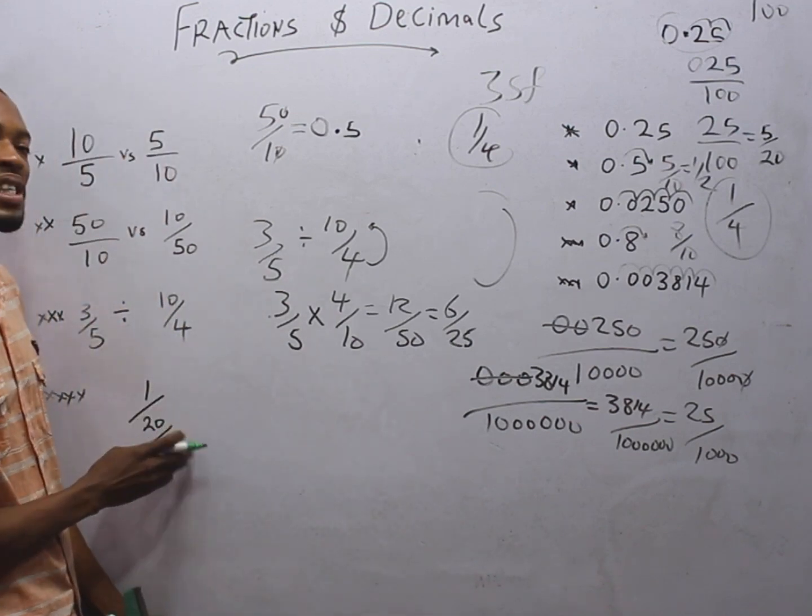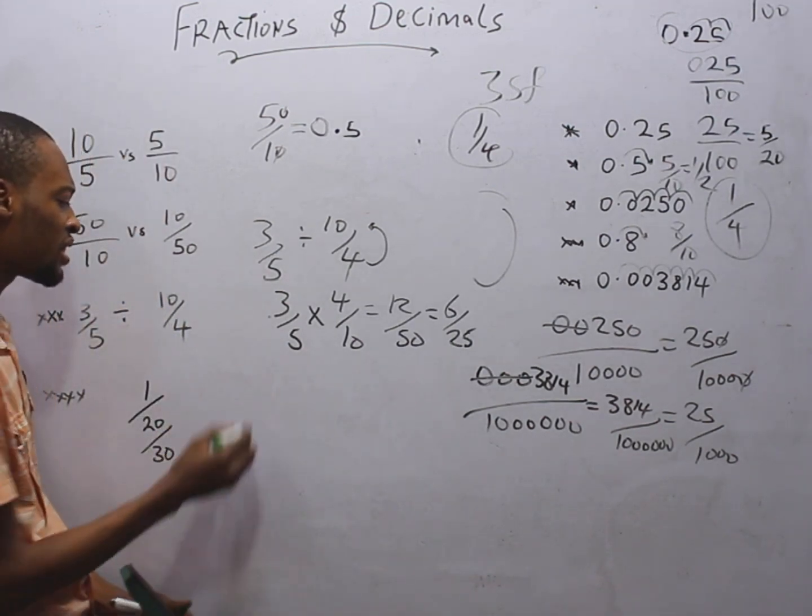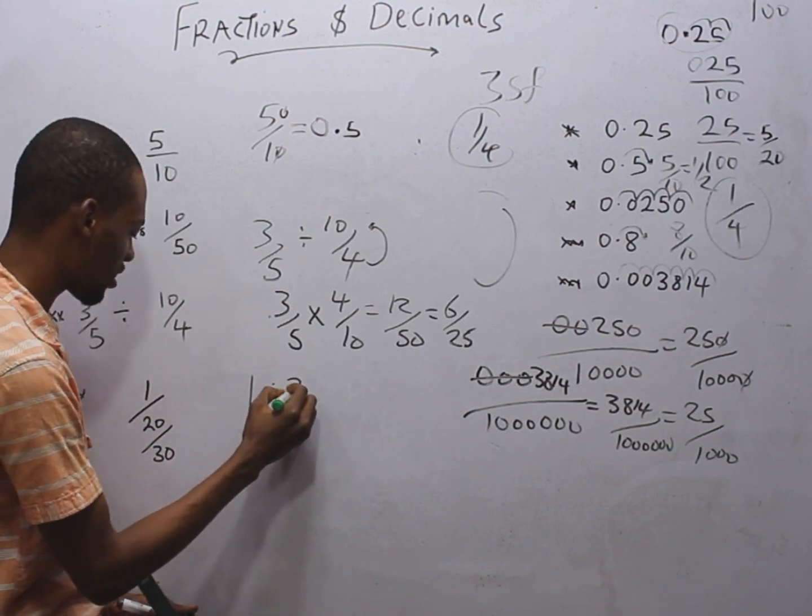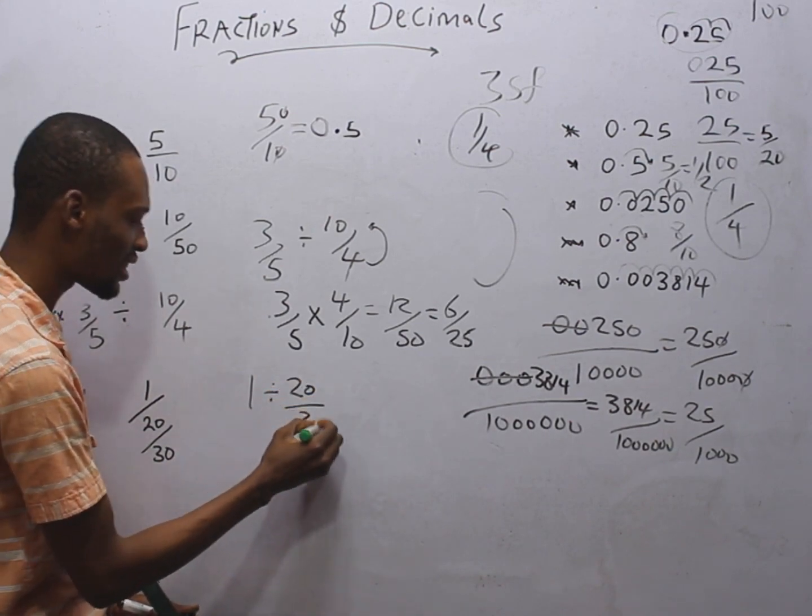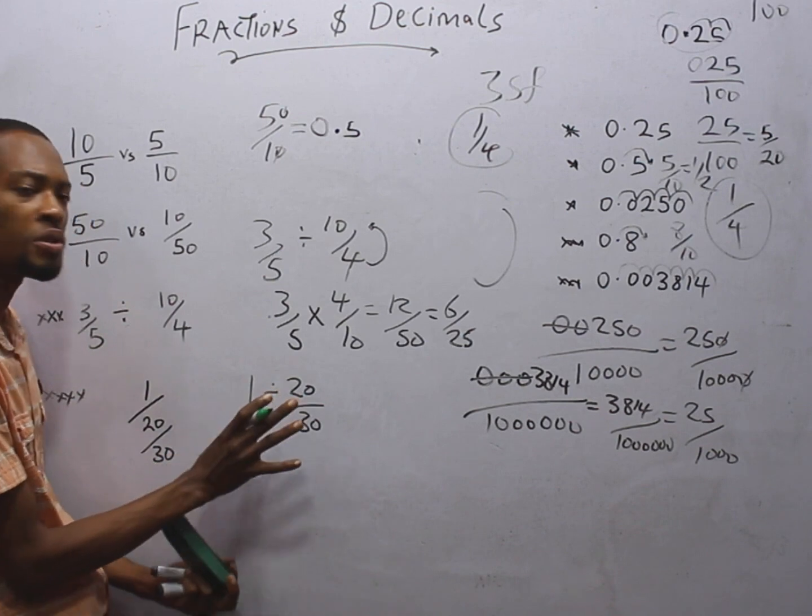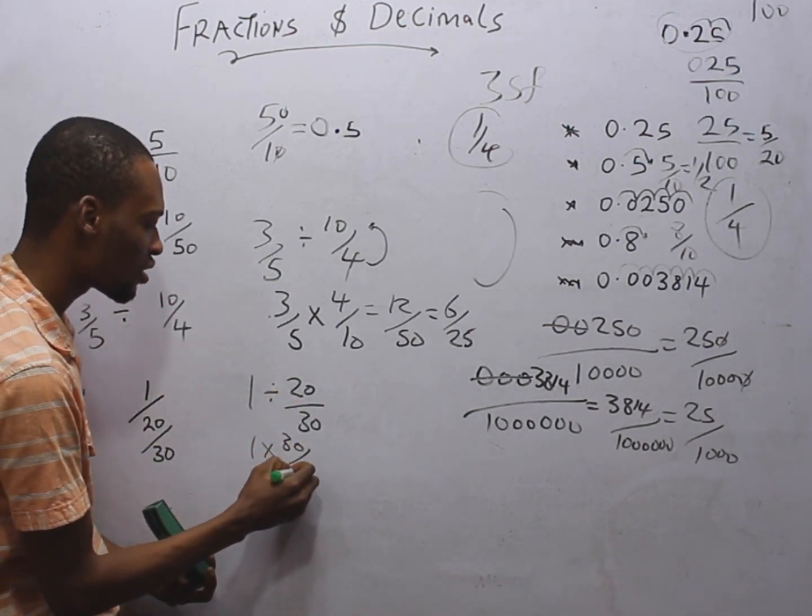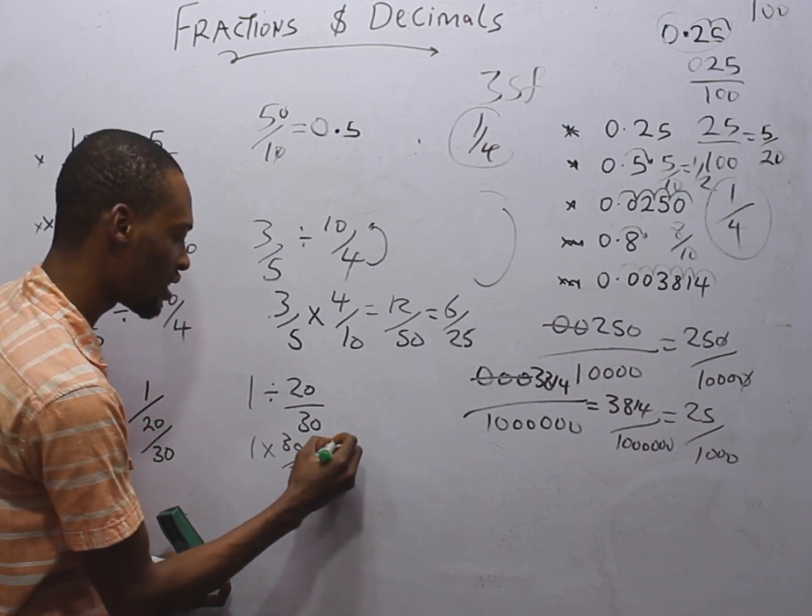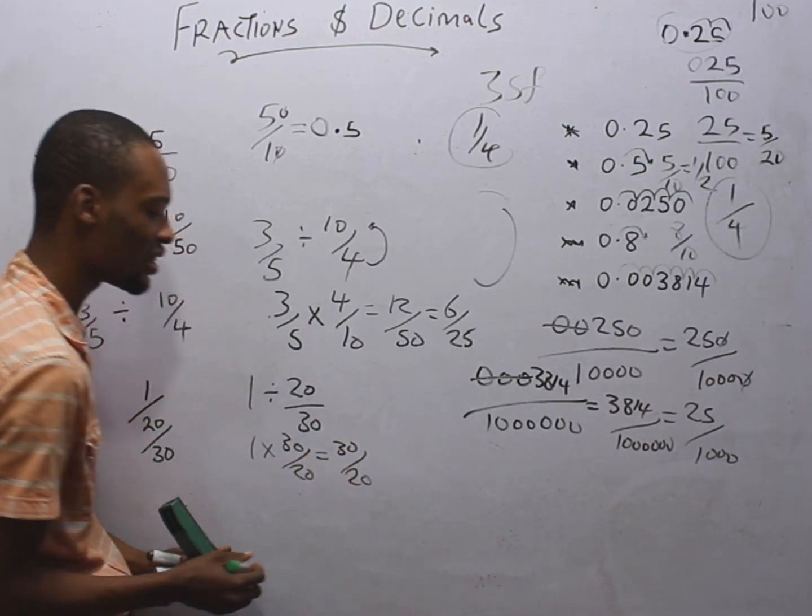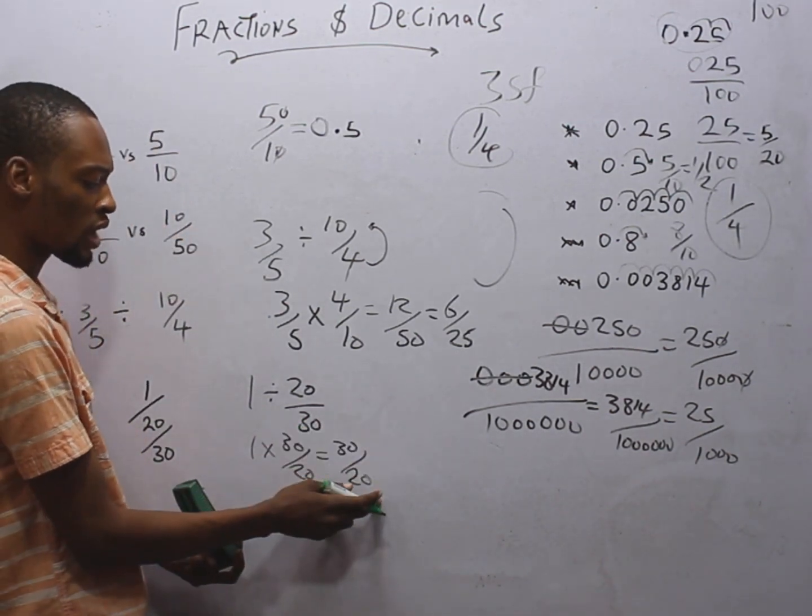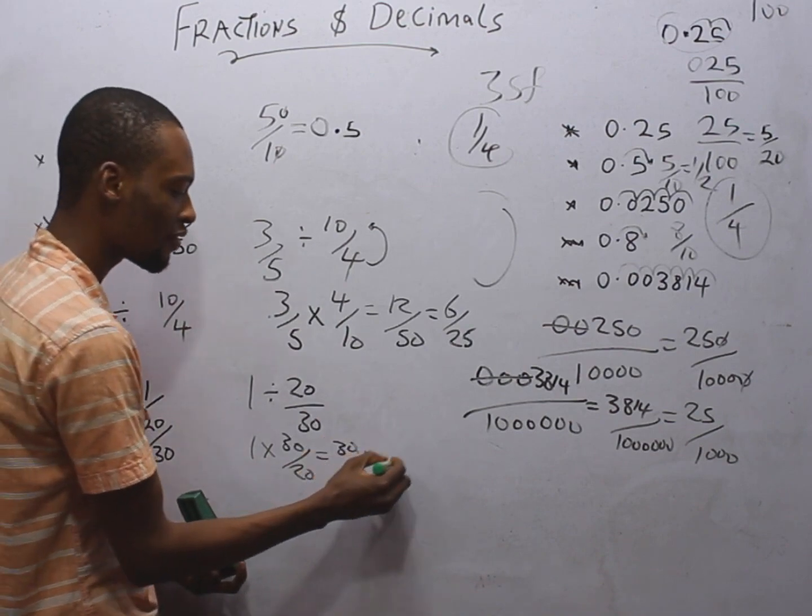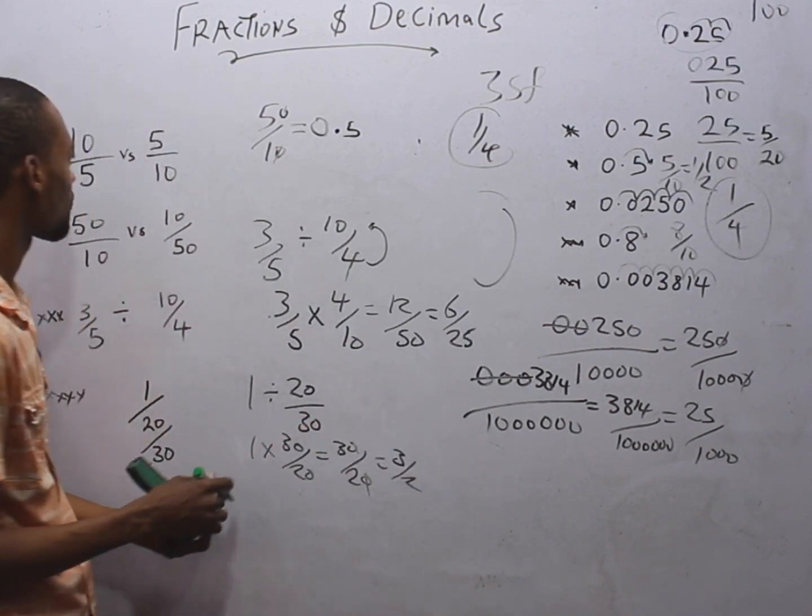Look at this. If you are saying 1 divided by 20 divided by 30, this is same thing as 1 divided by 20 over 30. And changing the division to multiplication, it is 1 times 30 over 20, which is 30 over 20. So, we have 0 here, we have 0 here. This goes with this. We have 3 over 2.